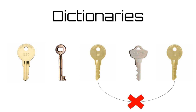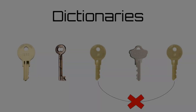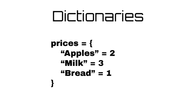To explain what I mean, imagine you have a dictionary of prices at a store. Maybe apples cost $2, milk costs $3, and bread costs $1. You can see that in the dictionary, each key is the name of a product, and each value corresponds to the price of that product. So, to find the price of bread, you would simply call the dictionary using the key 'bread', and the dictionary would return the value 1.